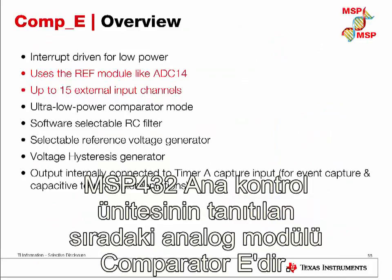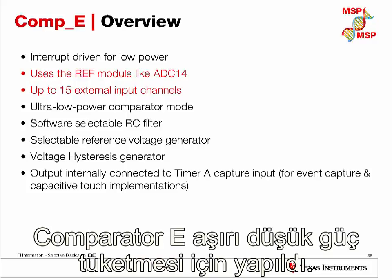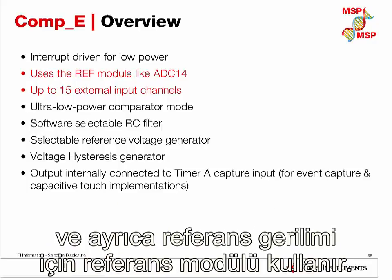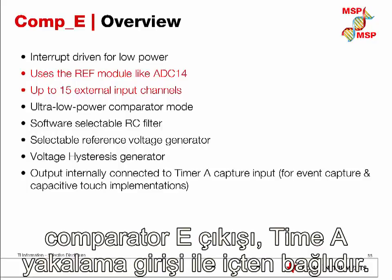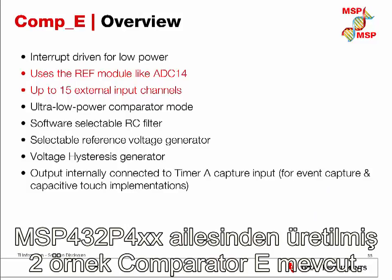The next analog module in the MSP432 MCU is the Comparator-E. It is an ultra-low power comparator introduced in previous MSP430 families. It is designed for ultra-low power consumption and can be interrupt-driven for low power operating modes. It has up to 15 external input channels and uses the reference module to generate the reference voltage. The output of Comparator-E is internally connected to the Timer-A capture input, enabling event capture or capacitive touch implementations. There are two instances of Comparator-E in the MSP432 P4XX family.